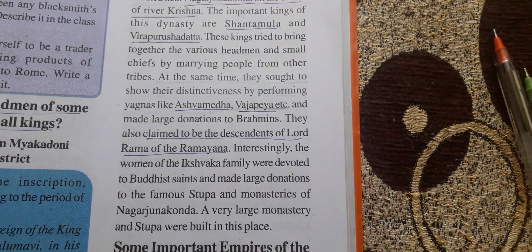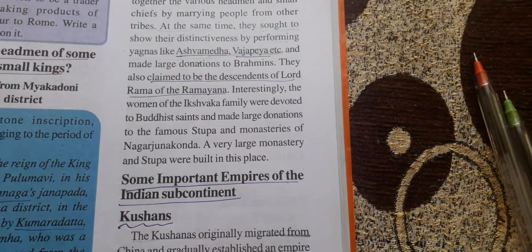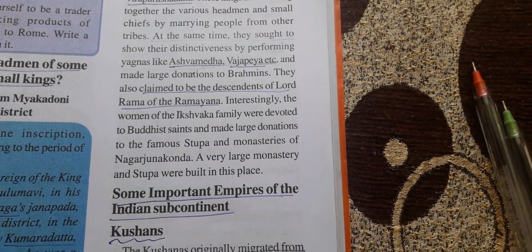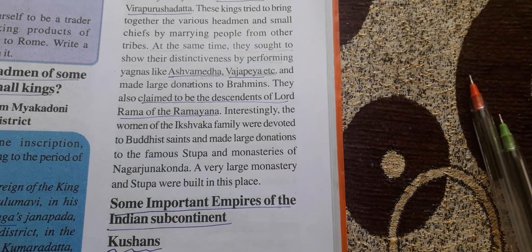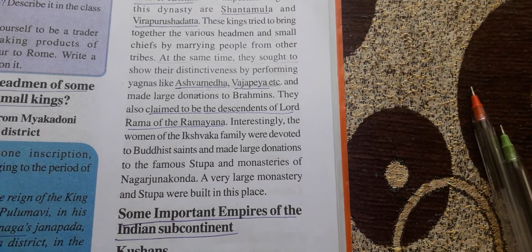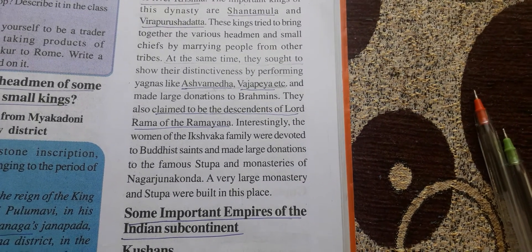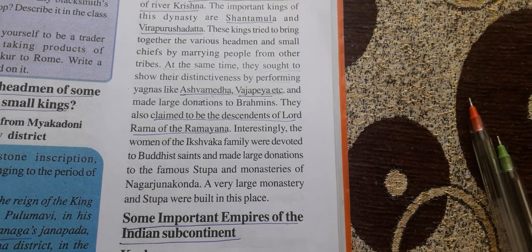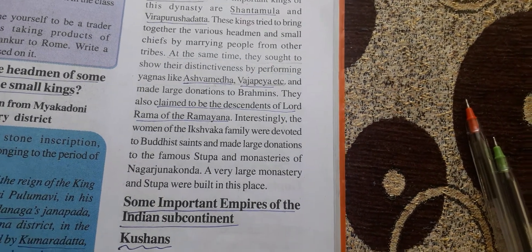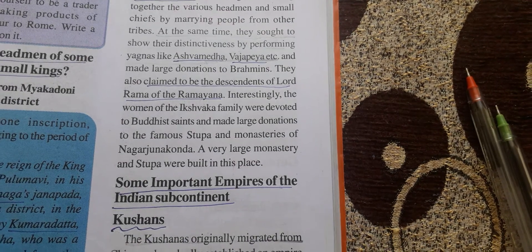The Ikshvaka kings also performed yagnas such as Ashwamedha yaga and Vajpayya, and made donations to Brahmins. They claimed to be descendants of Lord Rama of the Ramayana. The Ikshvaka women from their families also donated lands and ornaments to Buddhist saints to construct Stupas.